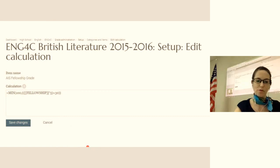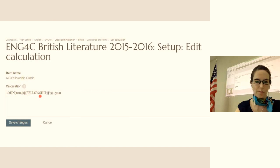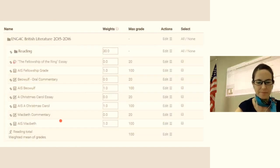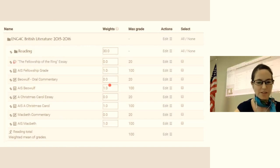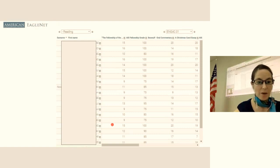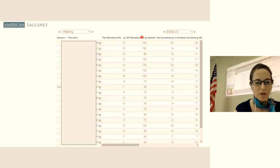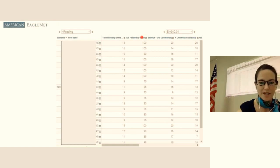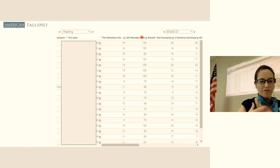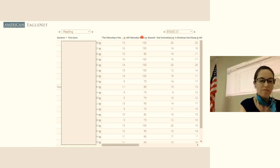We've already told grade book the raw score is worth nothing because we've given it a weighted value of zero. Now we're telling grade book: take that fellowship raw score, times it by 5 and plus 30. Again, you see the raw score with zero and our AIS grade weighted at one. So this is my class here - you can see the Fellowship of the Ring raw scores out of 20, and then how the AIS fellowship grade was translated into a percentage which then goes to letter grades. You can configure grade book to show whatever information you want - be it a percentage, or it can also put that into our AIS letter grade.